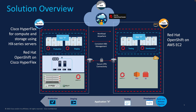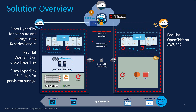For container orchestration and management, the solution uses Red Hat's hybrid cloud console and OpenShift Container Platform to deploy and manage Kubernetes environments in the hybrid cloud environment, enabling enterprises to deploy workloads anywhere with consistent management across both on-prem and public cloud. For persistent storage for stateful container workloads on-prem, the solution uses HyperFlex CSI to access data stores on the underlying HyperFlex storage. The solution also uses Red Hat Ansible to deliver infrastructure as code and Cisco Intersight Workload Optimizer to optimize both on-prem and public cloud resources and ensure application performance.